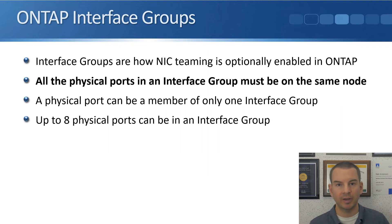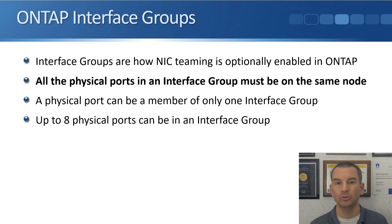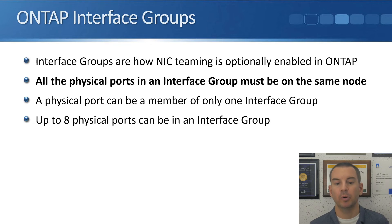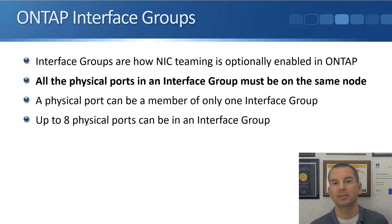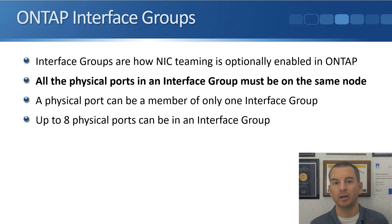Those would be two separate interface groups — you cannot put ports from both node 1 and node 2 into the same interface group. A physical port can be a member of only one interface group, and you can have up to eight physical ports in an interface group, which gives you additional bandwidth.